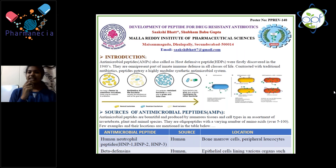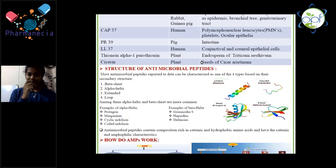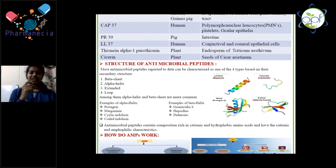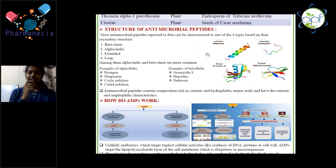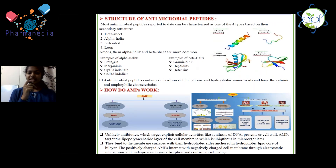Antimicrobial peptides are mainly of four types: alpha helix, beta sheet, extended, and loop, of which alpha helix and beta sheet are mainly used. Examples of alpha helix are protegrin, magainin, cyclic indolicidin, and coil indolicidin. For beta sheet there are gramicidin S, hepcidin, and defensins.